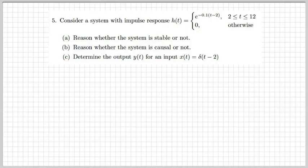The first exercise we'll work on today asks us to consider a system with a certain impulse response h(t) defined here, and there are three questions we should answer: reasoning whether the system is stable or not, whether the system is causal or not, and determining the output y(t) for a certain input x(t). If you're not familiar with the concepts of stability, causality, and how to calculate the output of a system given the input and the impulse response, I recommend watching the related theory video that I have posted.